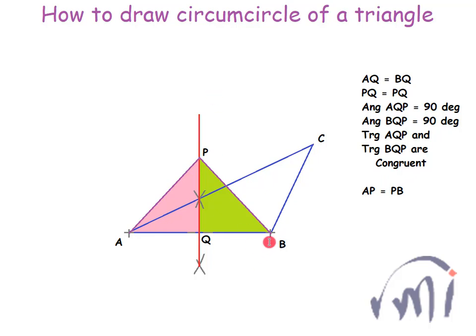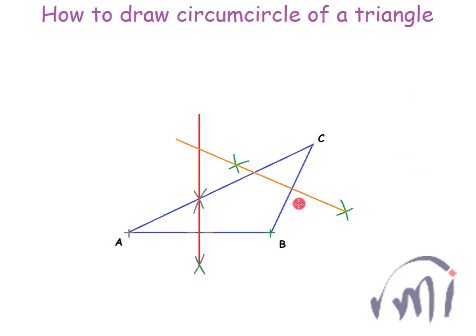Now if I draw the perpendicular bisector of BC also, what will be special about the point of intersection of those two perpendicular bisectors? Let's see. This orange is the perpendicular bisector of BC, and they both intersect at this point. Let me call this point O.